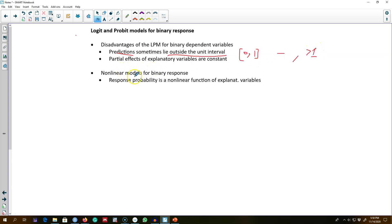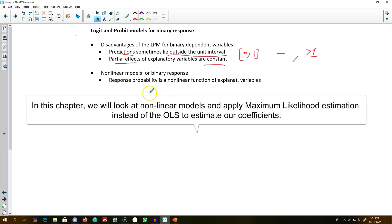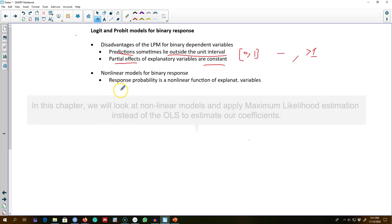We also saw there was a problem of heteroscedasticity with linear probability models, and the partial effect of explanatory variable was constant. Here I'm going to look at another type of non-linear model for estimating a model with a binary dependent variable.